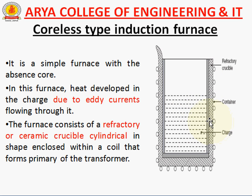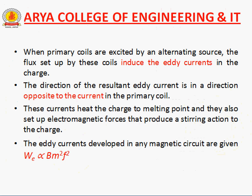The heat becomes produced due to the eddy current. When the primary coil is excited by an alternating source, the flux set up by this coil induces eddy currents in the charge. The direction of the resultant eddy current is opposite to the current in the primary coil. This current heats the charge to the melting point and also sets up electromagnetic forces that produce a stirring action in the charge. The eddy current loss is proportional to Bm² × f².